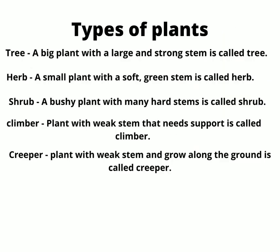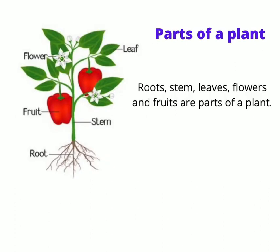A big plant with a large and strong stem is called a tree. A small plant with a soft green stem is called a herb. A bushy plant with many hard stems is called a shrub. A plant with a weak stem that needs support is called a climber. A plant with a weak stem that grows along the ground is called a creeper.